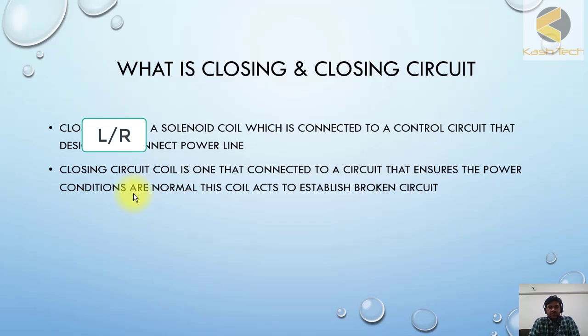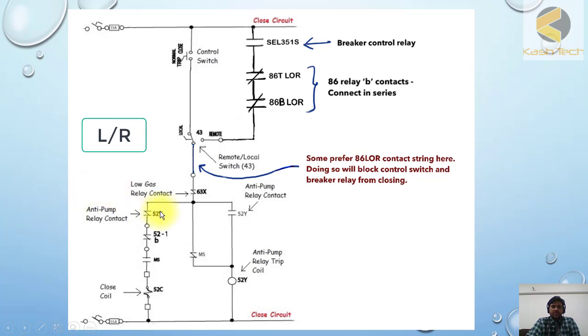And then the closed pulse will be provided to the breaker. So here you can see, this is the control switch. When you operate this switch, the DC will flow from here.